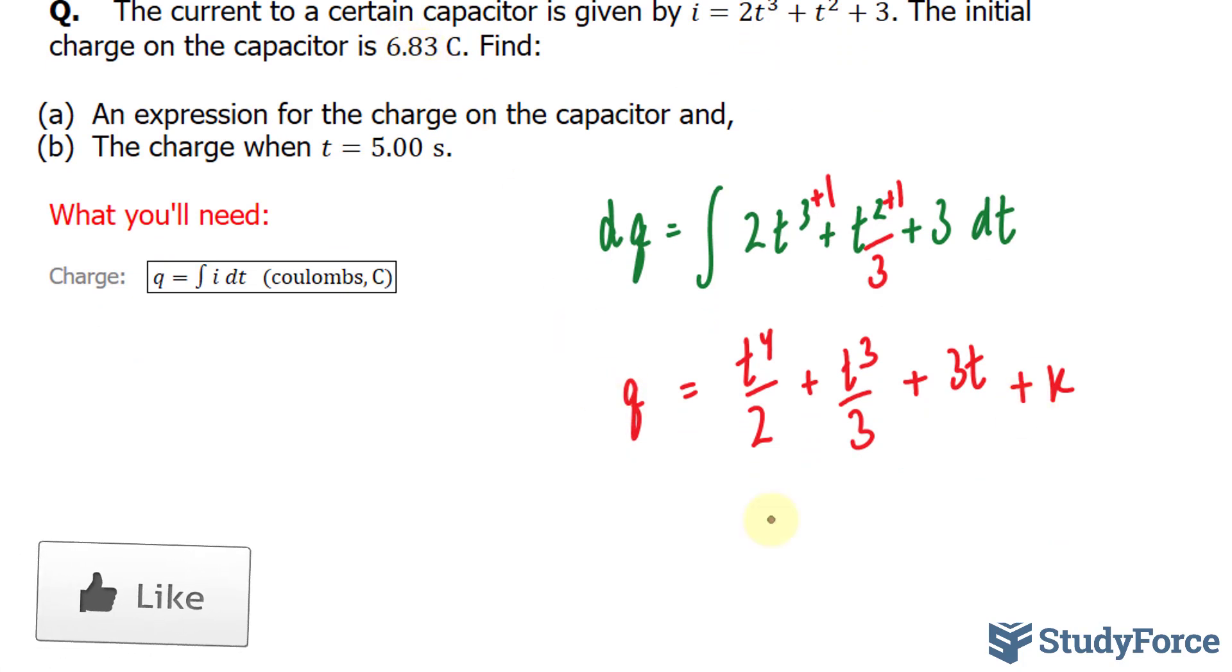We have 6.83 = 0/2, which is 0, plus 0/3, also 0, plus 3×0, also 0. Therefore, our constant k is 6.83.